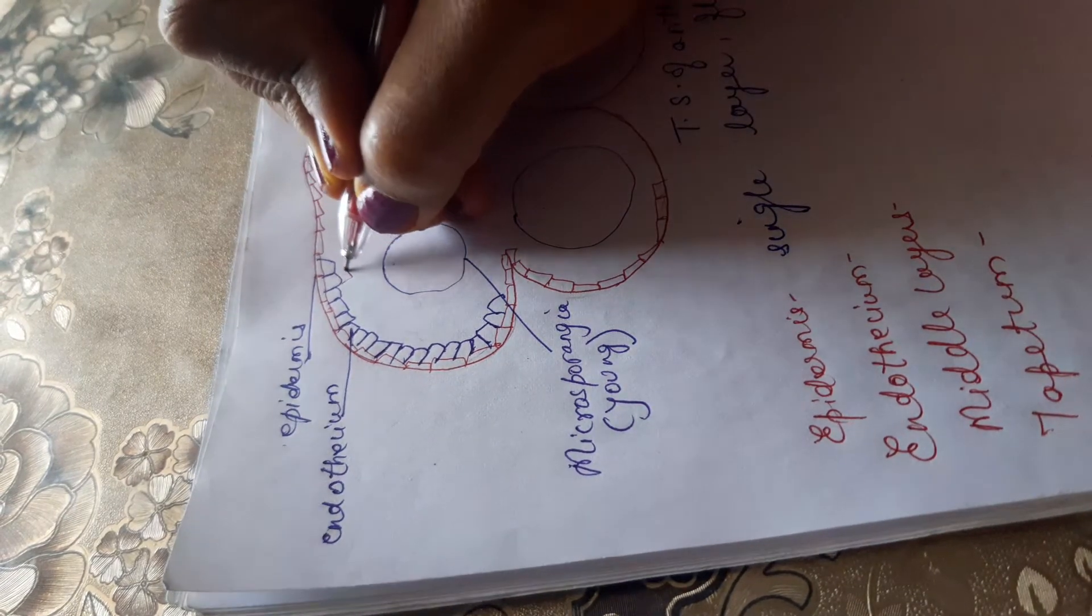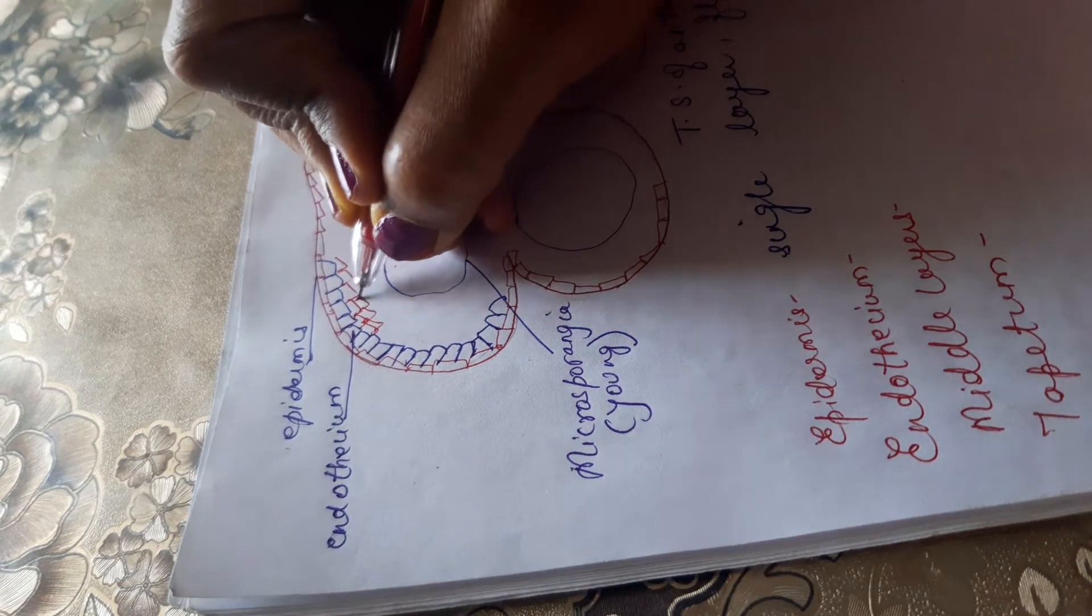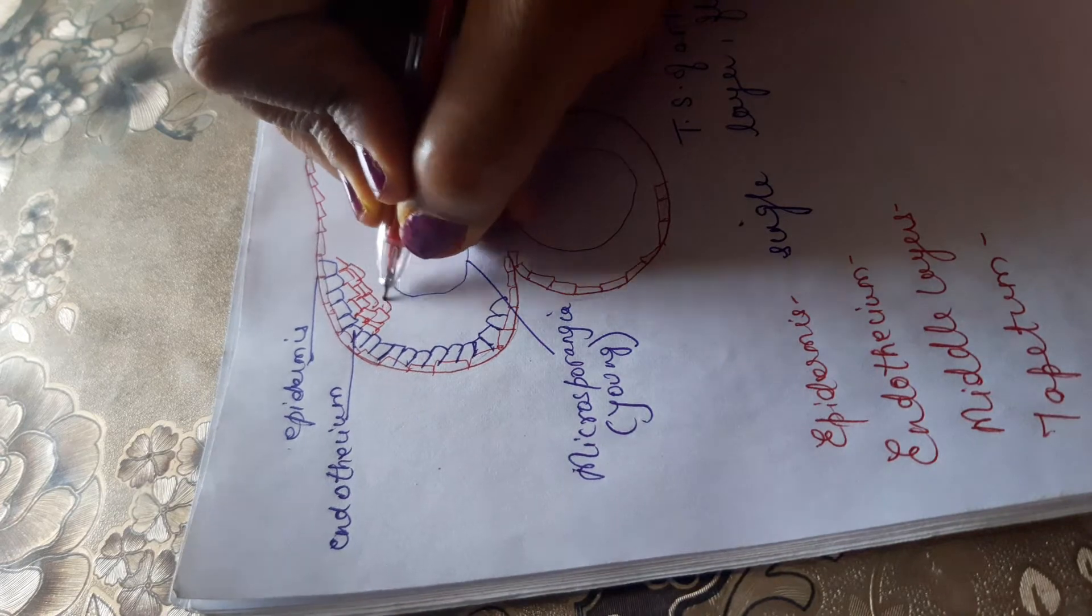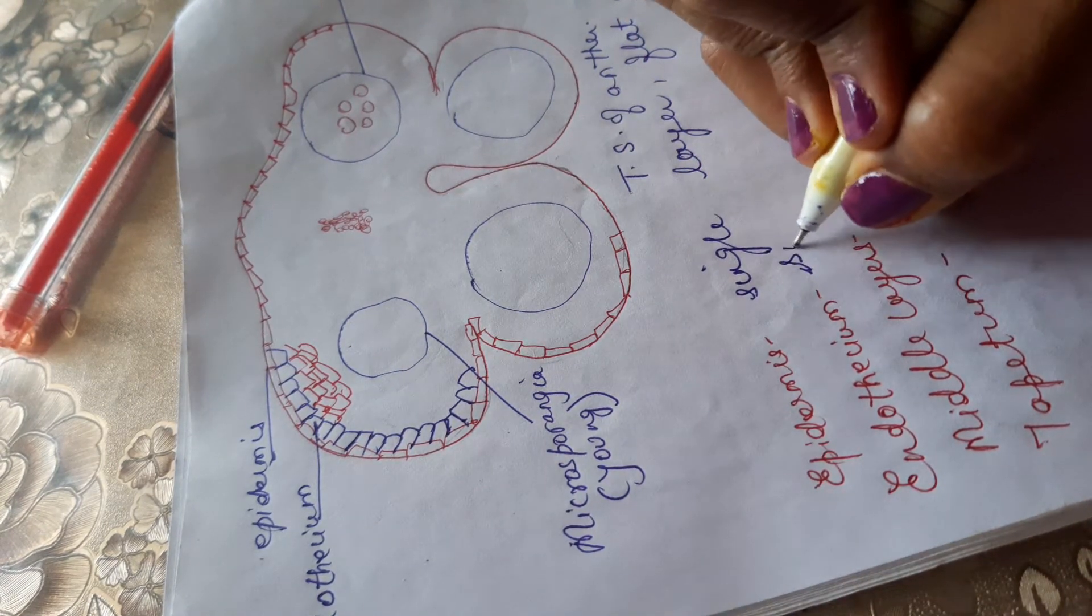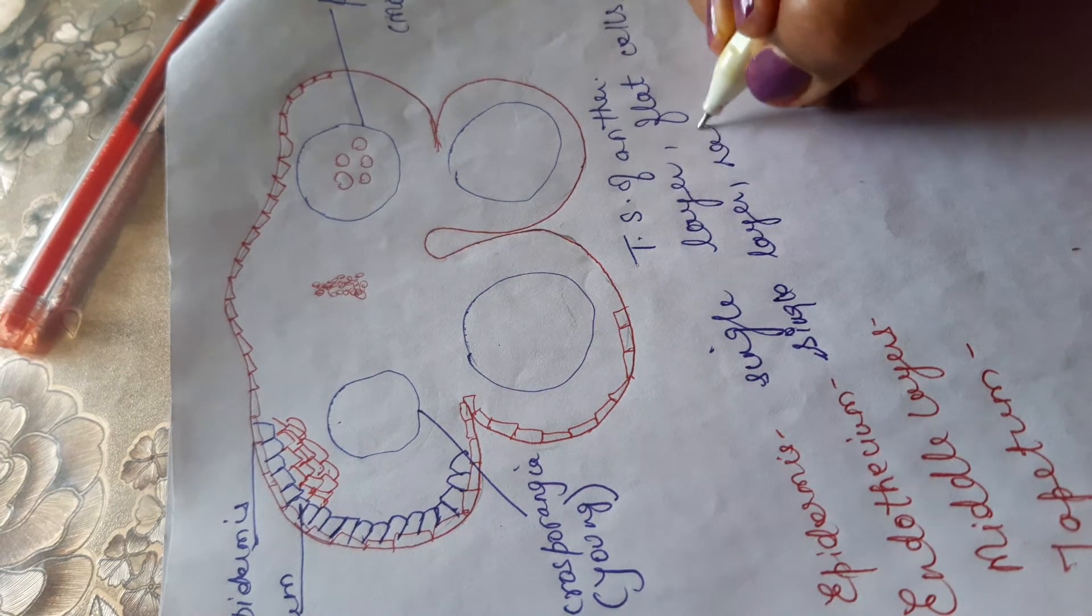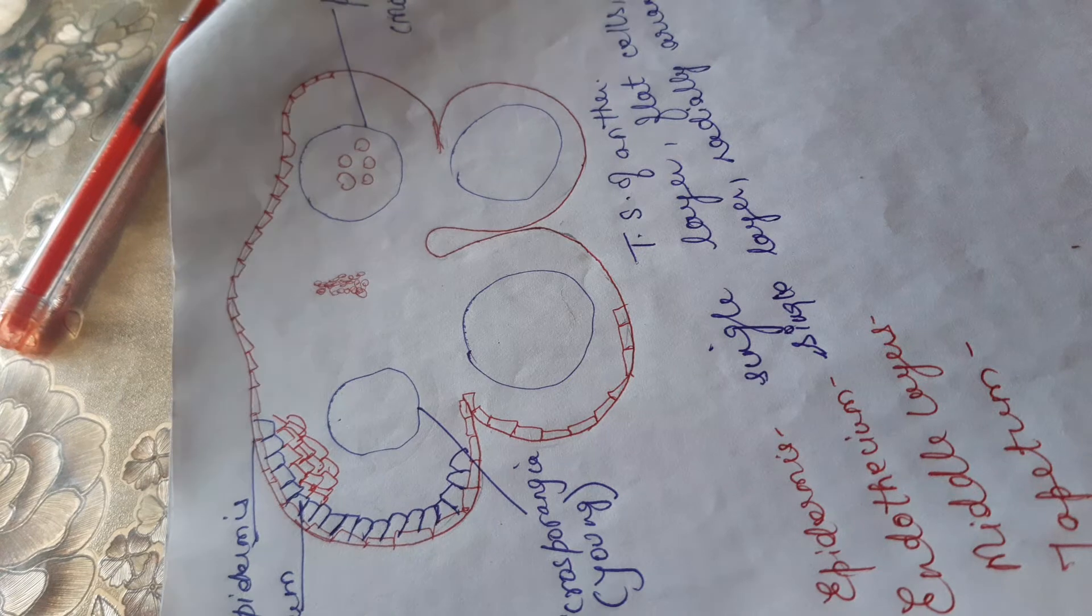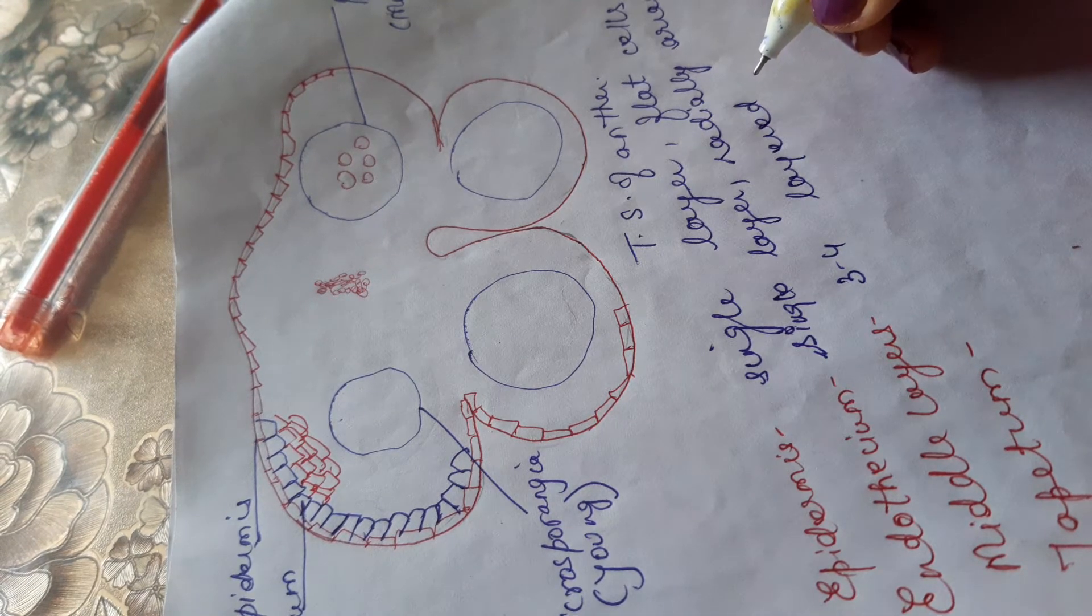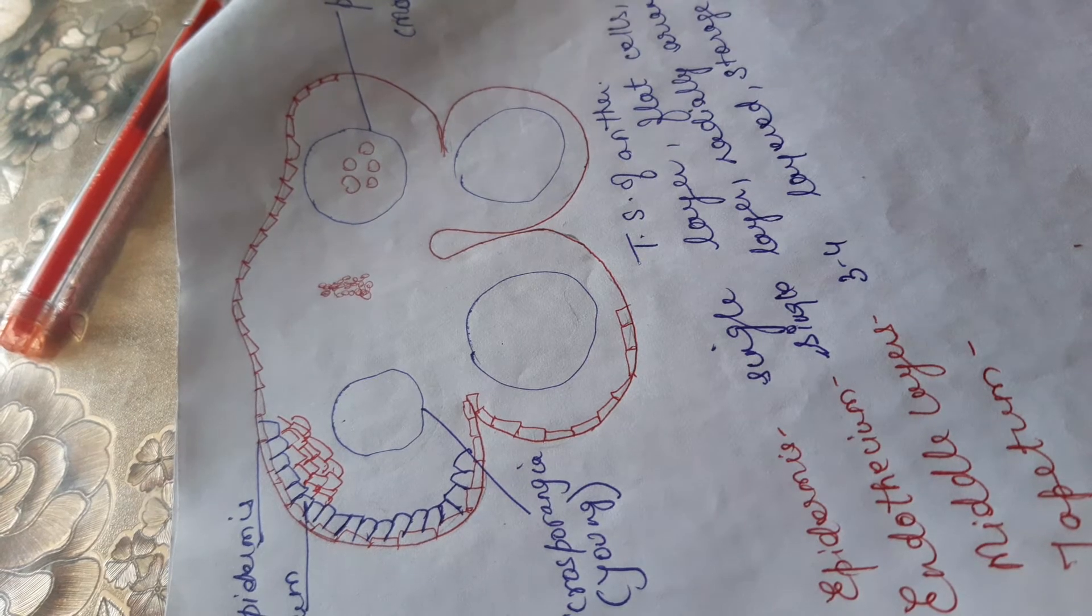Next is the middle layer. Middle layer is three to four layers. What is the function of middle layer? It is a storage center for starch.